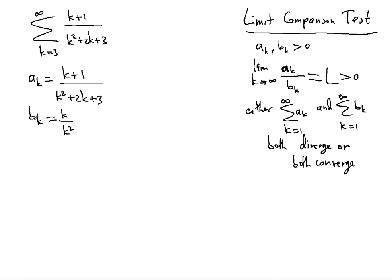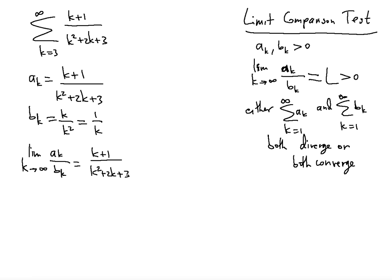It will be really close to the b_k term as k gets large, so these two will be closer and closer to each other. Always look at the dominating terms in the numerator and denominator — in this case k over k², which simplifies to 1/k. So now let's find the quotient. We're going to take the limit as k approaches infinity of a_k divided by b_k, which equals (k+1) over (k²+2k+3).